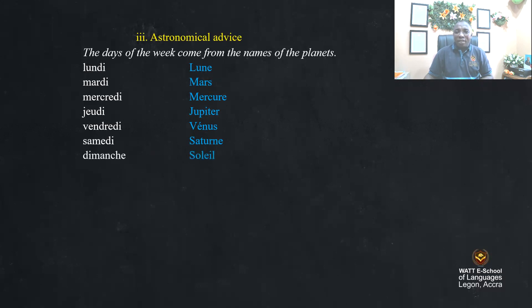Samedi comes from Saturne — that is from the sun. And Monday, that is moon — Monday comes from moon.